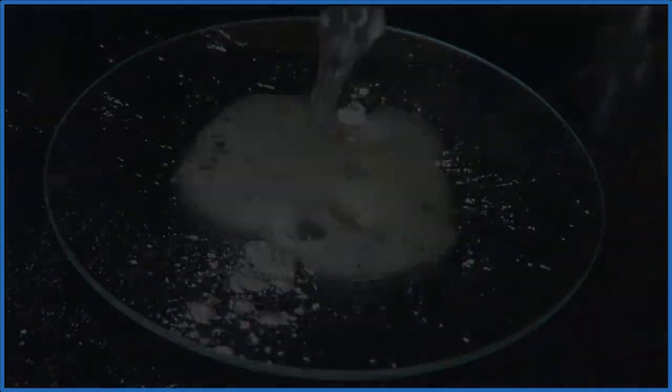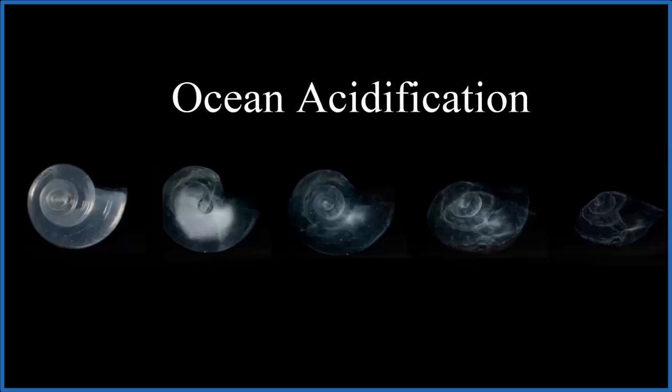And it's kind of important, because when the ocean absorbs carbon dioxide, it produces a weak acid. It's not hydrochloric acid, but it's enough of an acid that it dissolves shells, like in the picture here, over time. It's called ocean acidification.